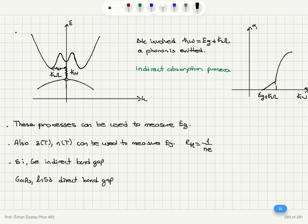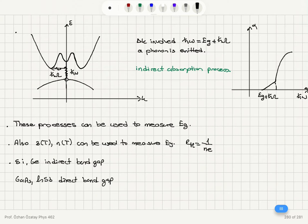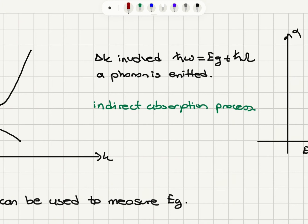On the other hand, we may have a scenario where the valence band edge does not coincide with the minimum of the conduction band. In this case, the electron will absorb a photon and that will involve phonon emission and a change in the k-vector of the electron in order to reach the conduction band edge. This is called an indirect absorption process. There is a Δk involved, and the incoming photon energy equals the band gap energy plus the phonon energy that has been created.